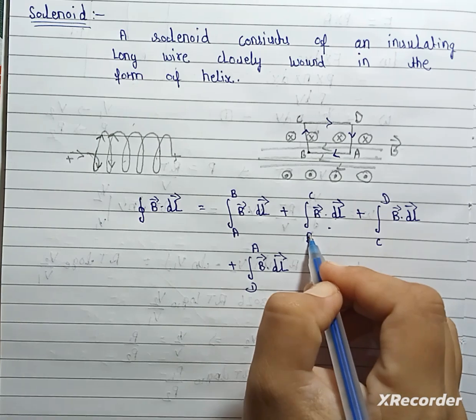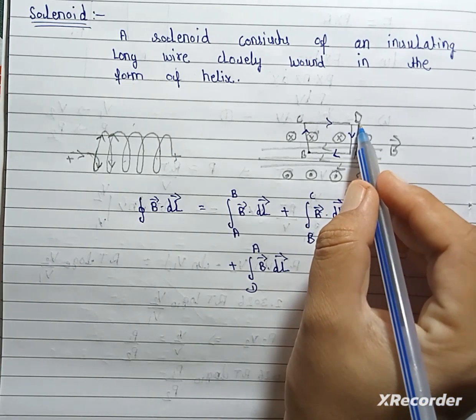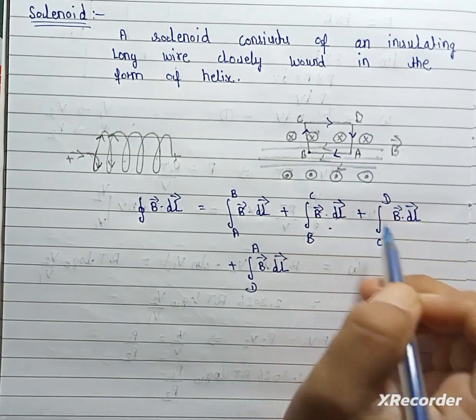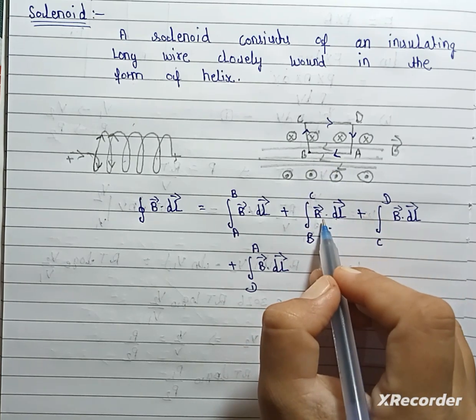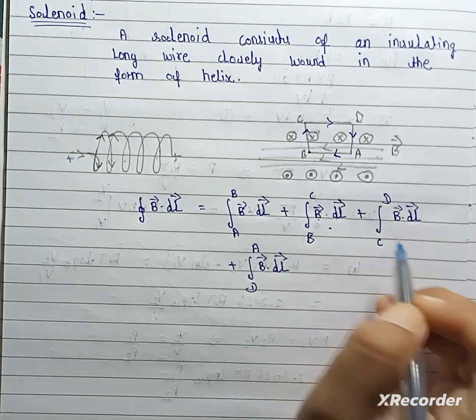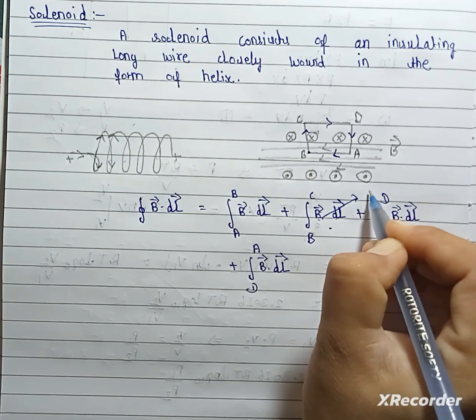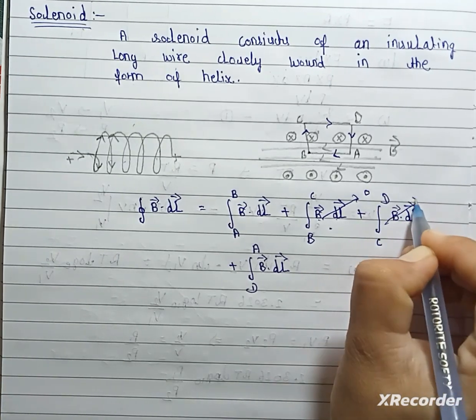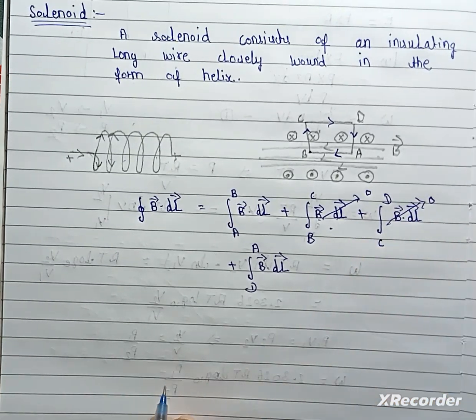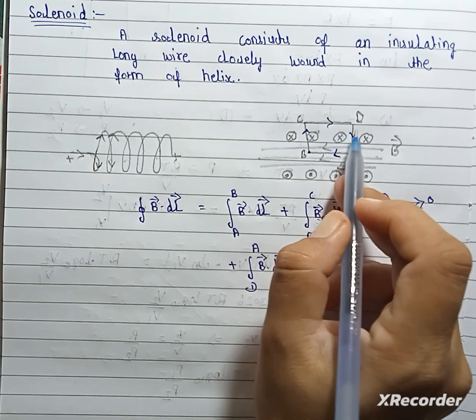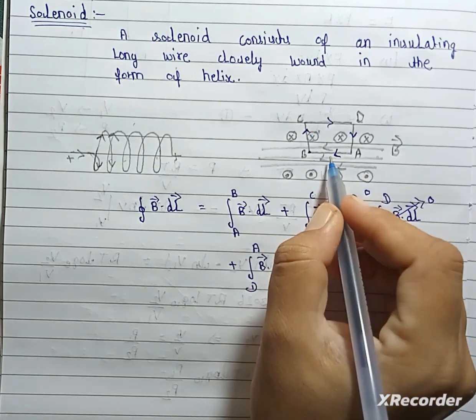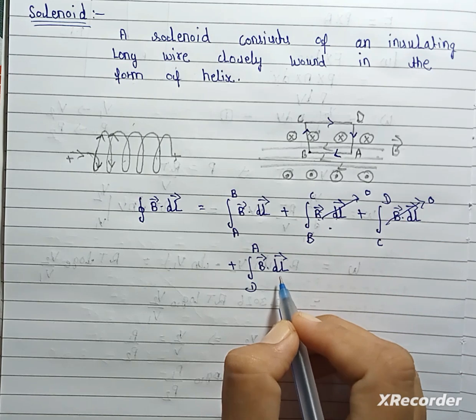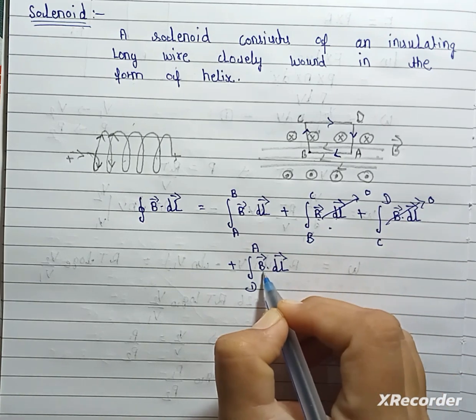For BC and for DA, B dot DL theta is 90 degrees, so not contribute. And, for CD also 0. Because, for outside B is 0. So, this is also 0.